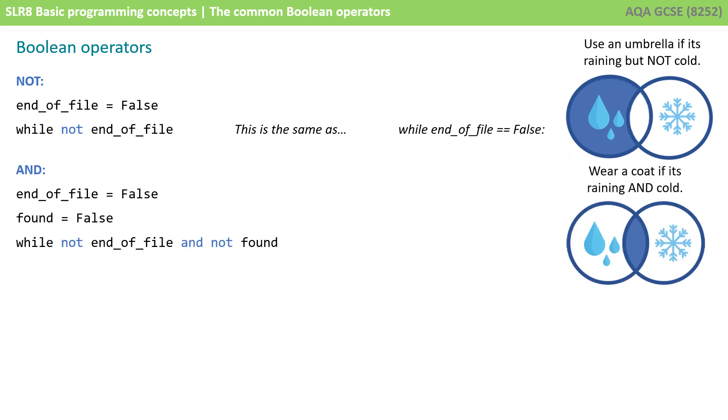The next Boolean operator is AND. In our example, wear a coat if it's raining AND it's cold, only if both conditions are true. So you can see here